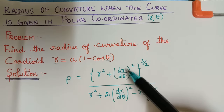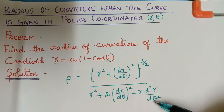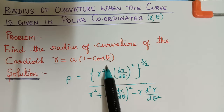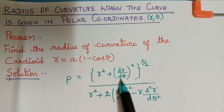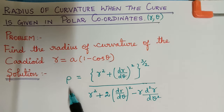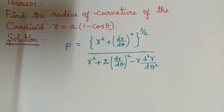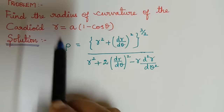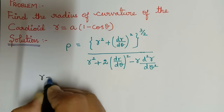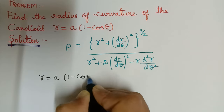First we have to find dr/dθ and d²r/dθ² using this curve, and then substitute in the formula to evaluate the radius of curvature. The given curve is r equal to a multiplied with 1 minus cos theta.